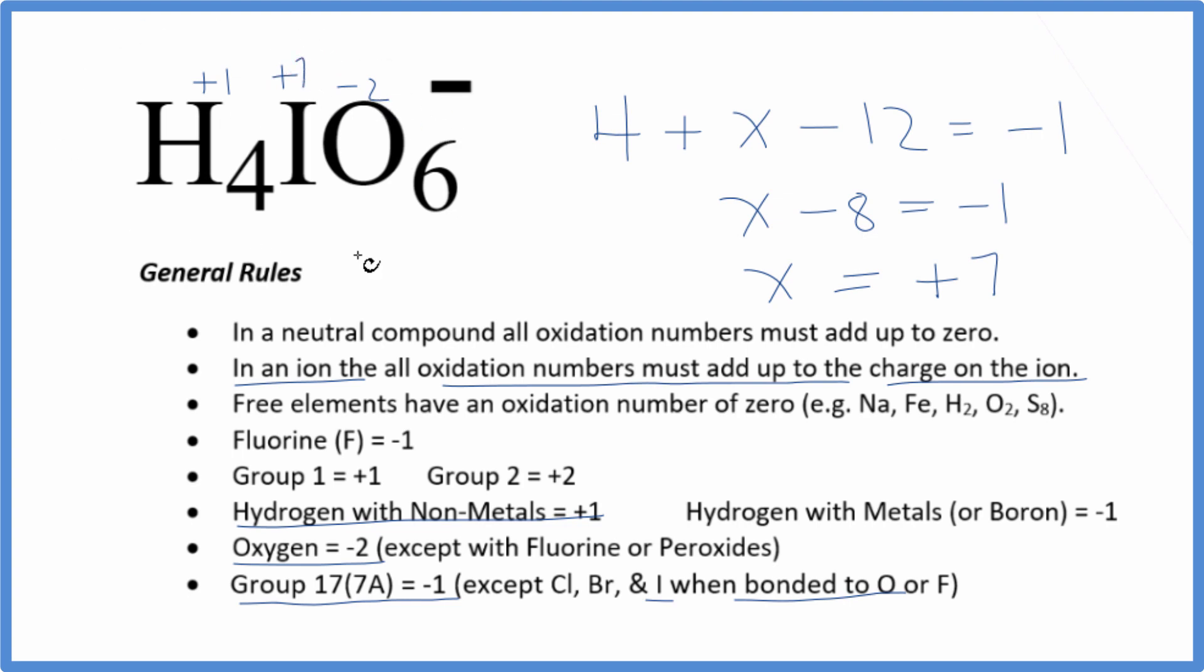And if we add all these oxidation numbers up for each atom, we're going to end up with this negative 1. This is Dr. B with the oxidation number for each element here in H4IO6 minus. Thanks for watching.